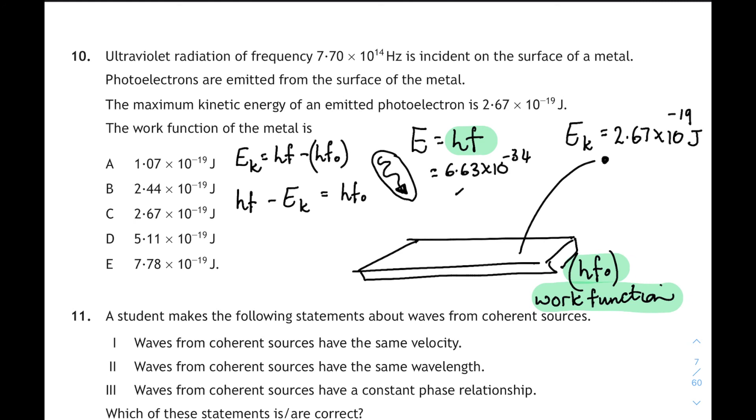The energy of the photon is Planck's constant, 6.63 times 10 to the minus 34, times the frequency that's given in the first line of the question, 7.7 times 10 to the 14, that should be, and if I do that correctly on my calculator, 5.11 times 10 to the minus 19, that's the energy of the photon, HF. So we now have to take to that, 5.11, subtract the kinetic energy, 2.67, and that will give us the work function, which is 2.44. Don't forget that's all times 10 to the minus 19. That's a huge amount of work for one mark, corresponds to answer B.